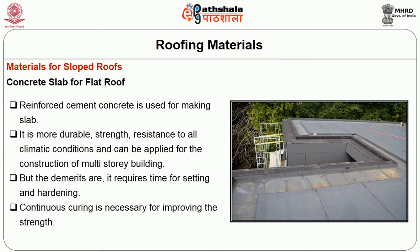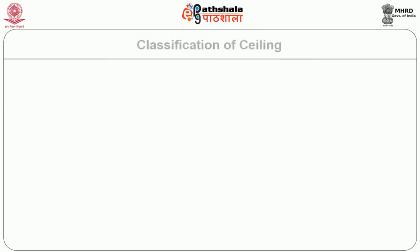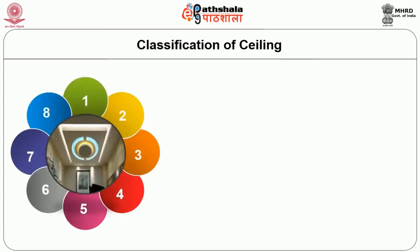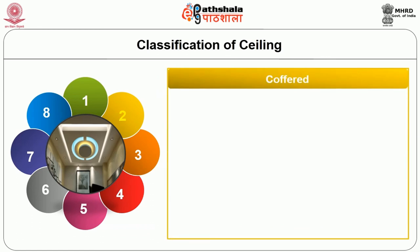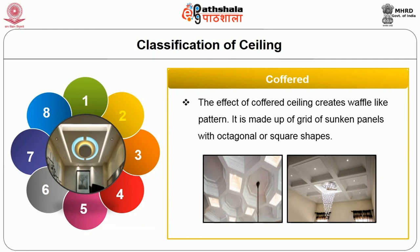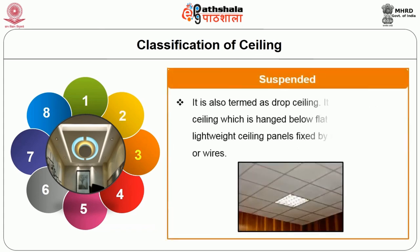Ceilings are classified based on appearance and materials. The first type is a flat ceiling, which is the conventional type mostly used in all buildings with a standard height of 3 meters. Coffered ceiling creates a wafer-like pattern made up of a grid of sunken panels with octagonal or square shapes. Suspended ceiling, also termed drop ceiling, is a secondary ceiling hung below the flat ceiling with lightweight ceiling panels fixed by metal hangers or wires.